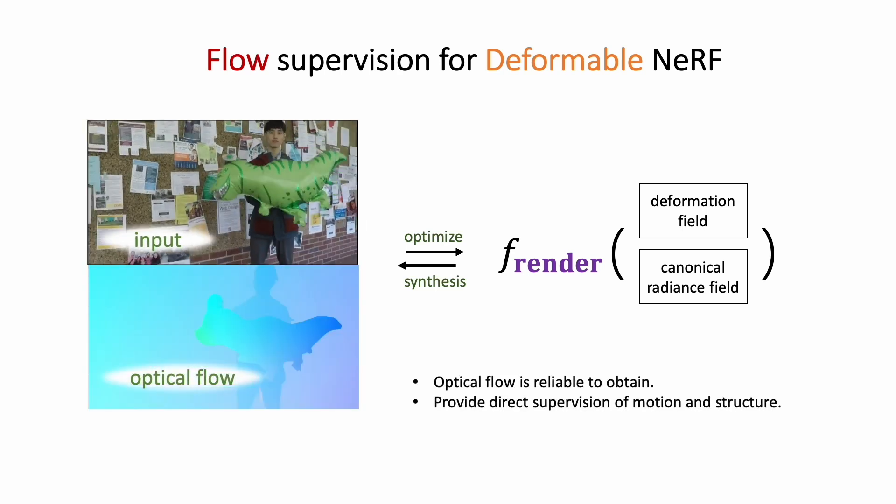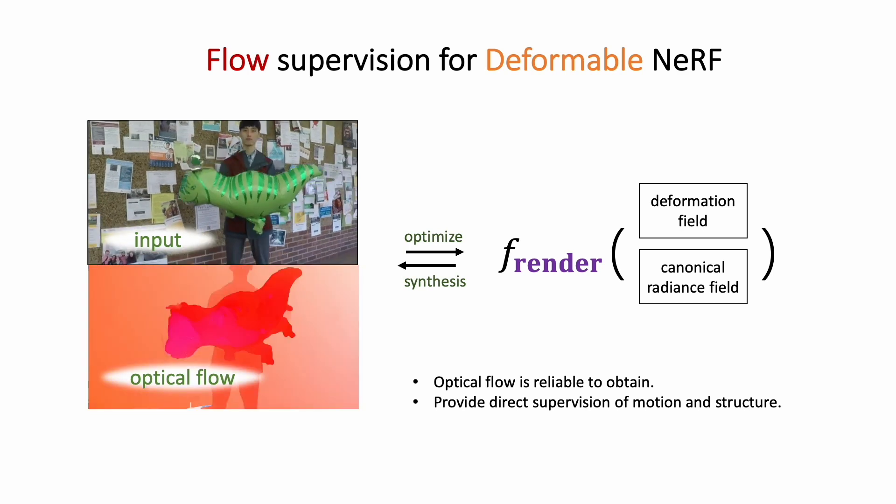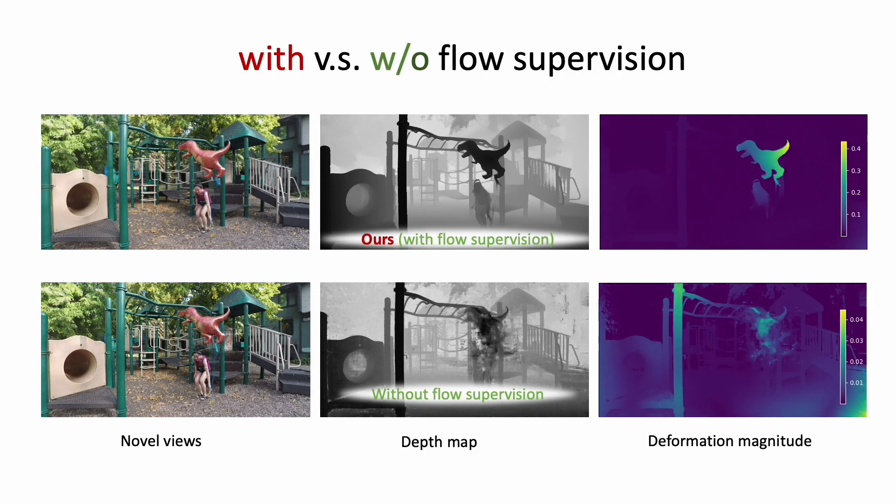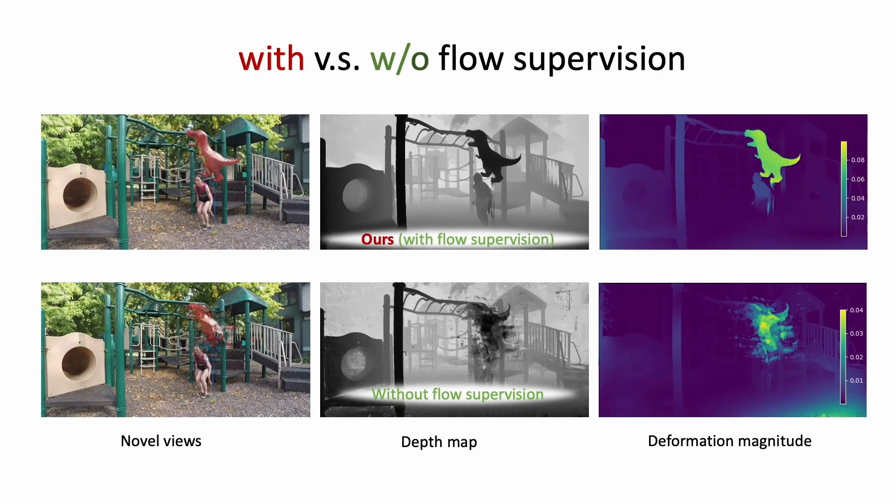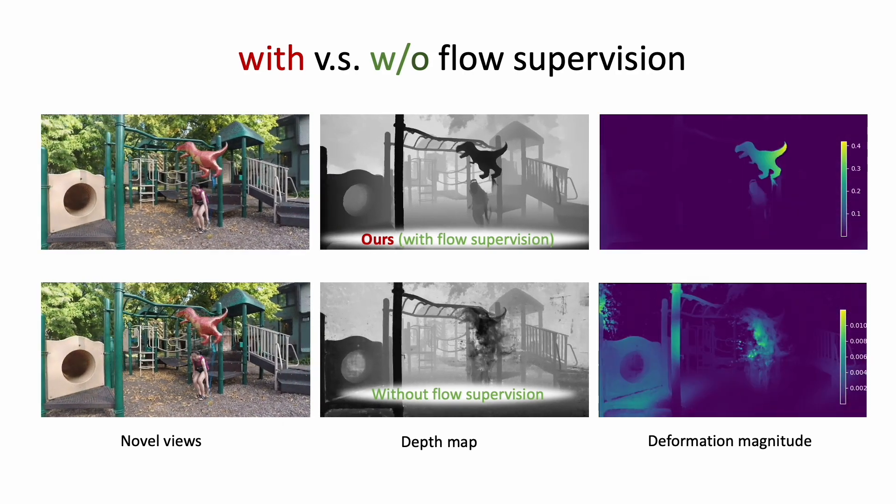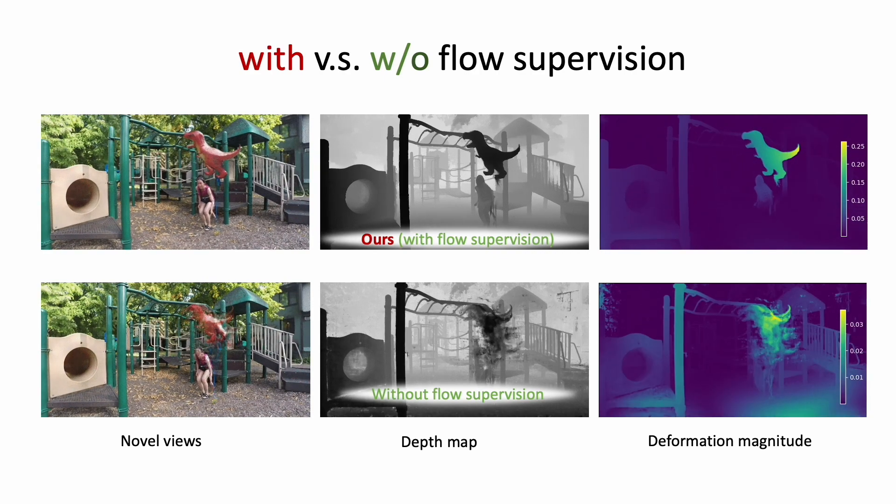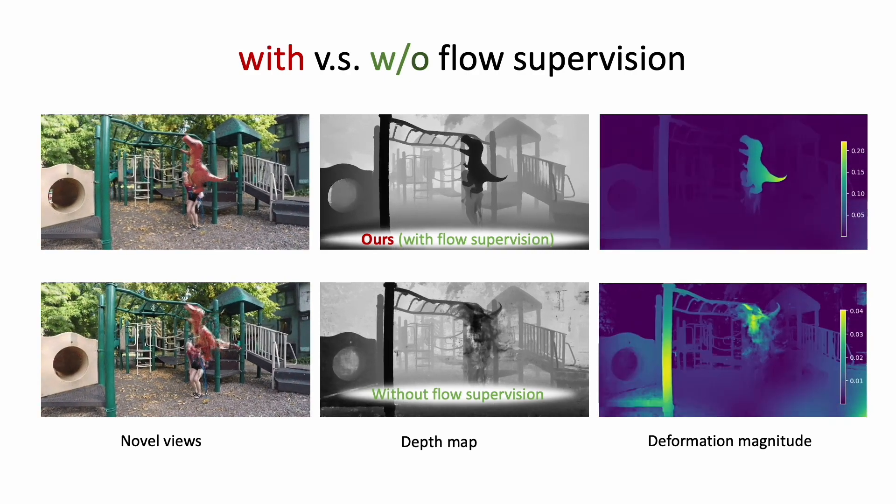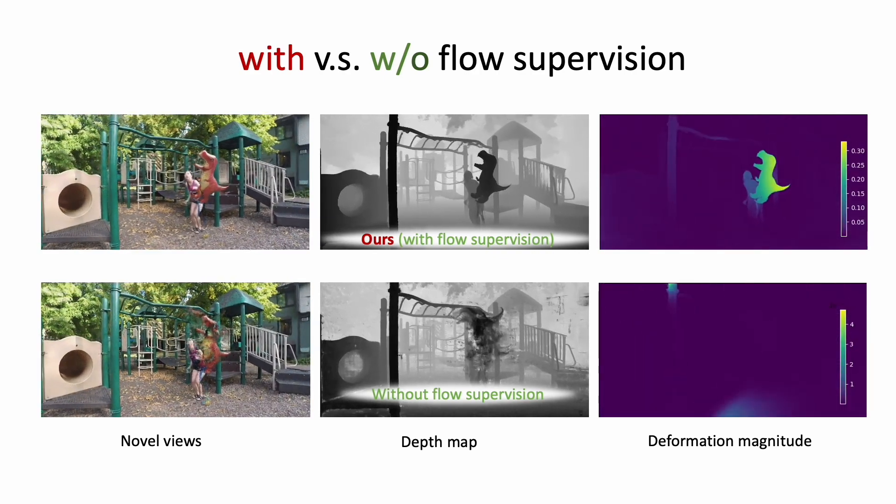By leveraging optical flow, which provides direct supervision for motion and structure, we achieve significant improvements in monocular novel view synthesis compared to a baseline without flow supervision. Our method produces superior depth maps, view synthesis results, and effectively separates moving objects from the static background.